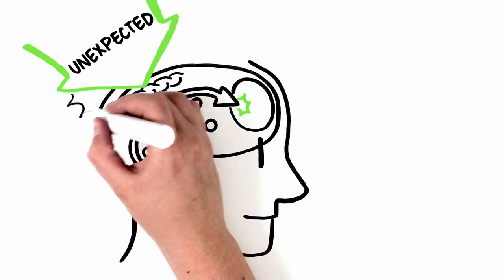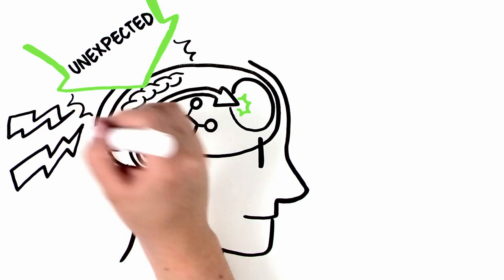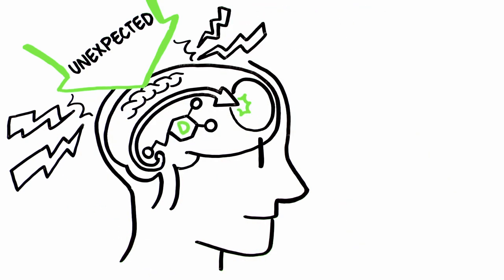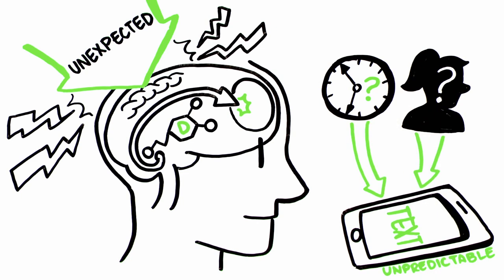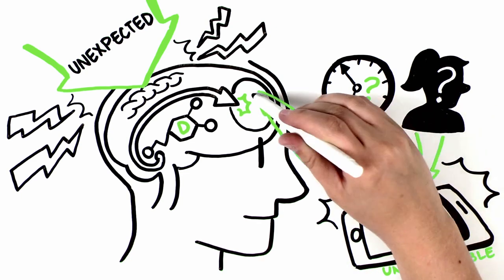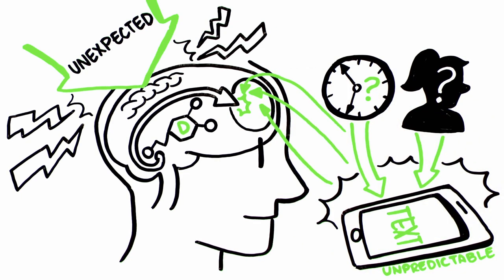When something happens that's not exactly predictable, that stimulates the dopamine system. Texts show up, but when will they arrive? Who will they be from? It's unpredictable, and this is exactly what stimulates the dopamine system.